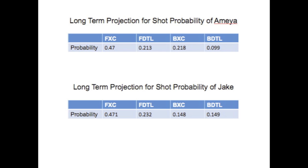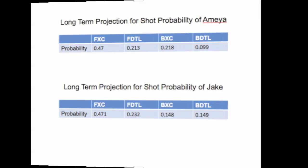Shown are the equilibrium matrices for the two gun players, obtained by raising the power of each transition matrix by a large number. The matrices appear fairly similar, especially the number for cross-court forehands, with a difference of only one one-thousandth between the two competitors. This is because, as both players were right-handed, they tended to rally using their cross-court forehands, which is considered the safest shot in tennis due to the added amount of court to hit into as opposed to a down the line shot, and the relative ease of a forehand as opposed to a backhand.